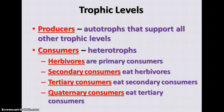The vocabulary terms here start with producers. Producers are the autotrophs that support all the other levels. In a land-based or terrestrial ecosystem, you're talking about plants that get their energy from the sun. In an aquatic or marine ecosystem, you're talking about phytoplankton, algae, seaweed, and so forth that also get their energy from the sun. In some ecosystems it would also be the chemoautotrophs that get their energy from inorganic chemicals.